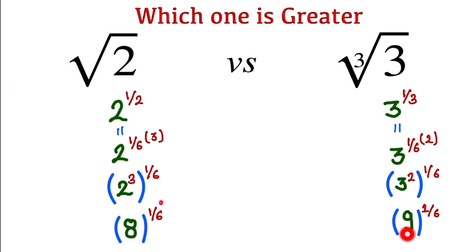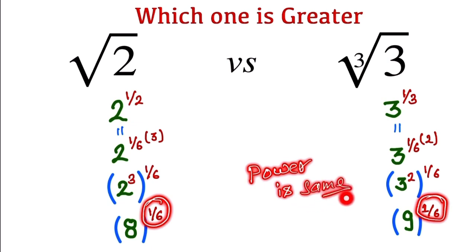And here the power is the same. So when the power is the same, we can decide by the base. So here this one is 9, so this one is greater.